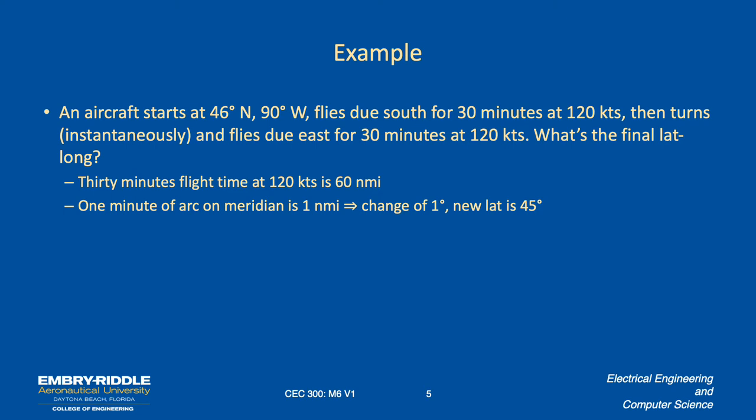Then one minute of arc corresponds to one nautical mile, right, along the prime meridian, along any of the meridians. One nautical mile and one minute of arc should be the same thing. So if we've gone 60 nautical miles, we've gone 60 minutes of arc, and that should correspond to a change of one degree. So our new latitude is 45 degrees.